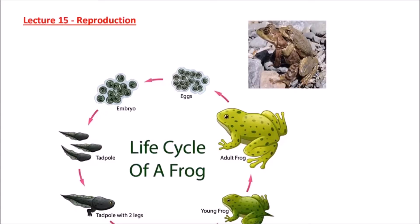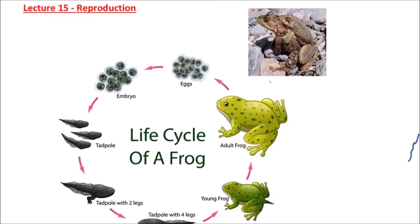Welcome to Studio Biology. In this video, we are going to discuss the reproduction in frogs. It's very important to note that frogs lack any type of copulatory organs, but they perform an act of pseudocopulation which is known as amplexus. We can observe amplexus here — during amplexus, the male frog sits over the back of the female and sexually excites it.